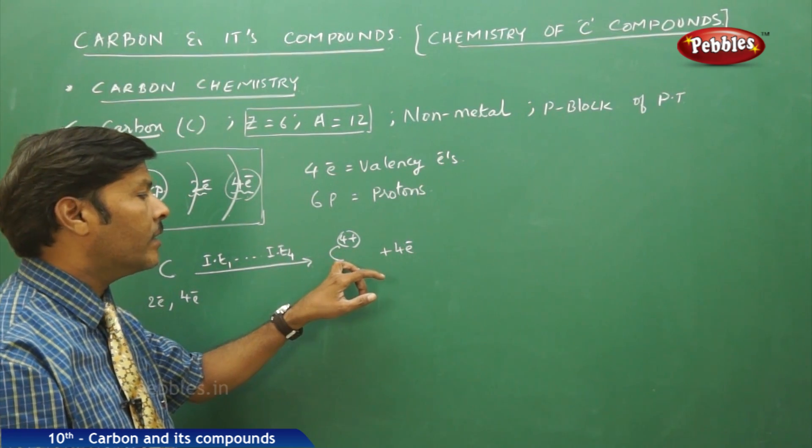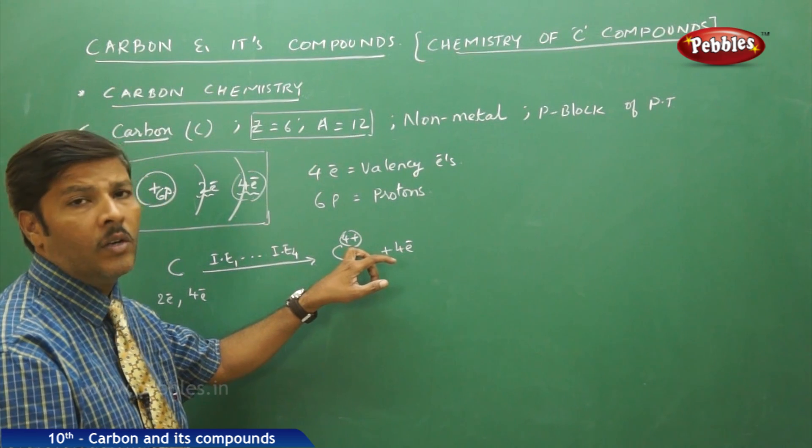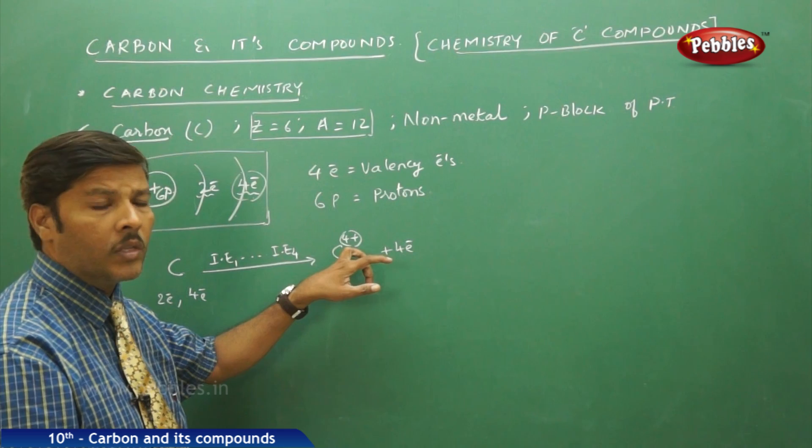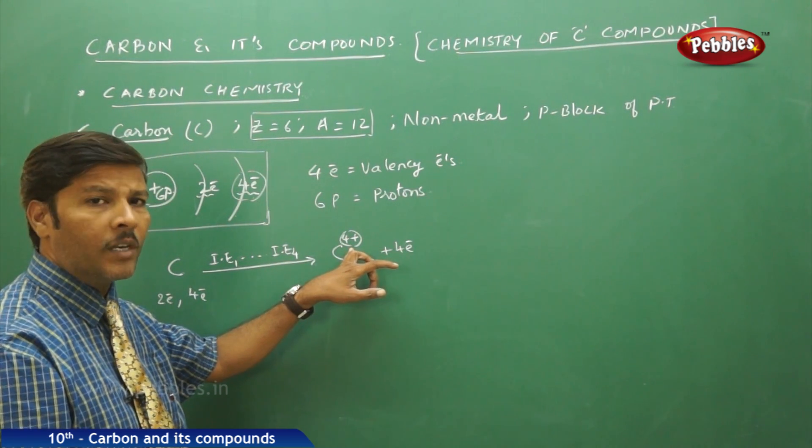What exactly we have to understand here is carbon with great difficulty is going to acquire 4 units of positive charge. Therefore, carbon cannot show the positive oxidation state, plus 4 oxidation state, with that much easiness.